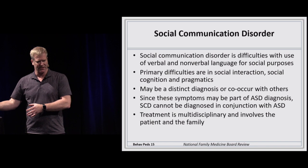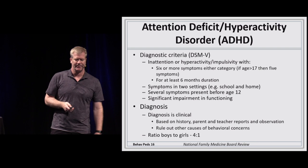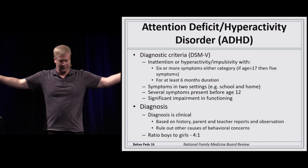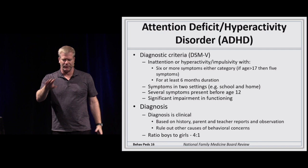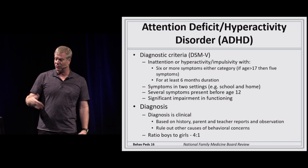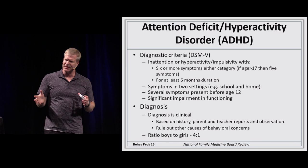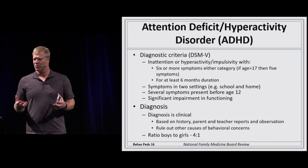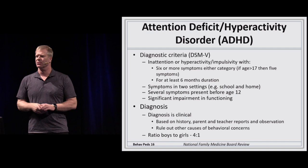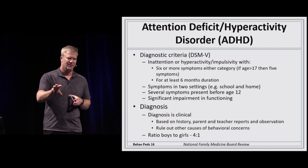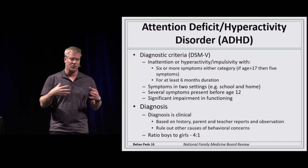Attention deficit hyperactivity disorder requires six or more components per DSM-5, presents before age 17, and must be persistent — not just a stage the child is going through. There are three main subtypes: hyperactive, inattentive, and a combination of both. The hyperactive subtype presents as constantly on the go — these children have a cruise control set at 75 rather than 55.